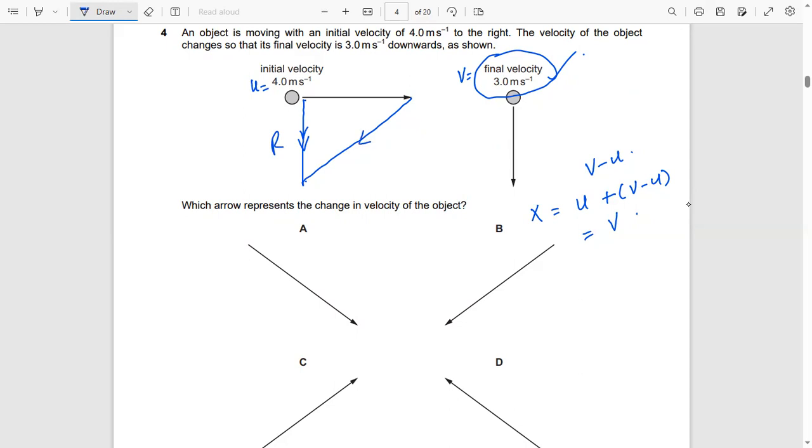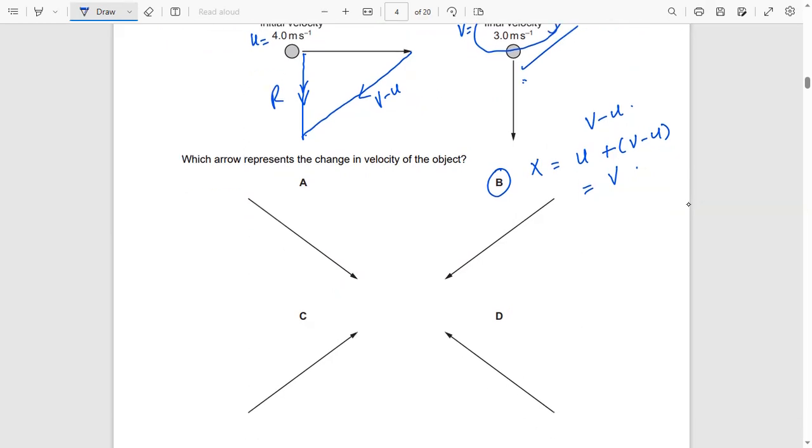And this is the change in velocity that we have: V minus U. So the answer for this is B. This is the initial velocity, this is V minus U as you can see, and this vector is the resultant velocity, which is the final velocity 3 meters per second. So the answer is B.